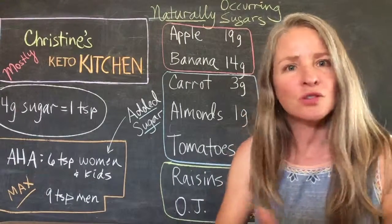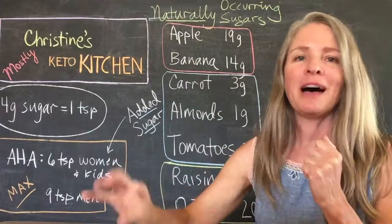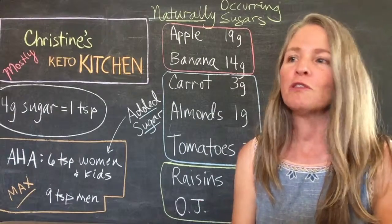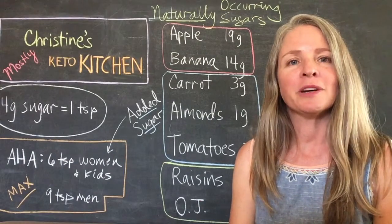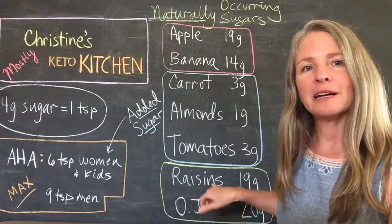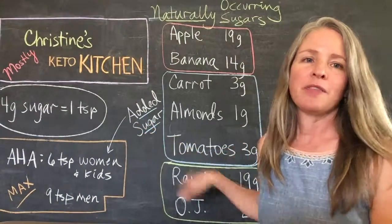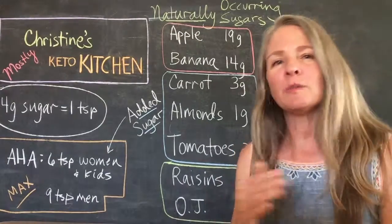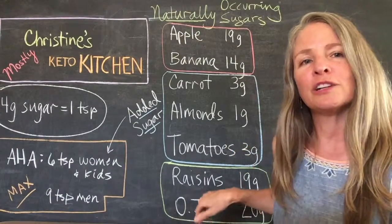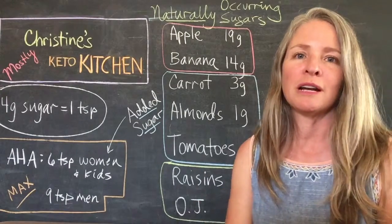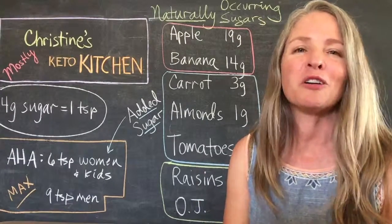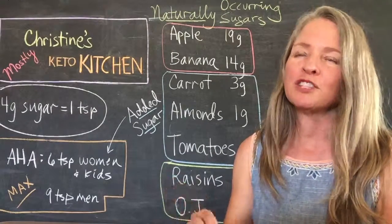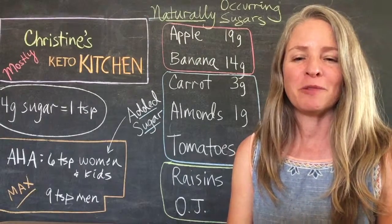Dried fruit and juice are kind of like having added sugar, and they're not going to be counted in what the American Heart Association tracks. For me, it's a little murky — I would include these things because sugar is sugar. I'll talk more in future videos about the structure of sugar and how different words correspond to different types of sugars we eat.